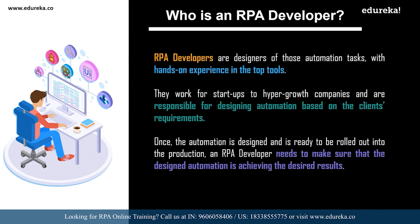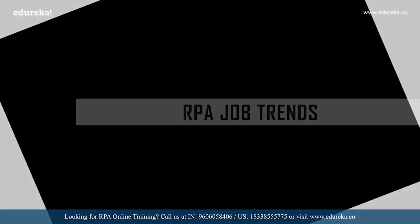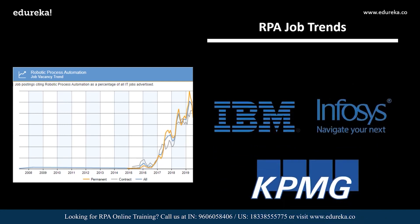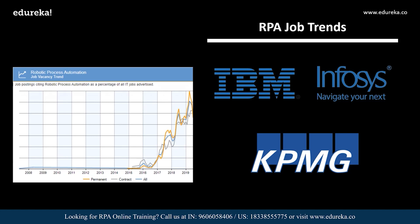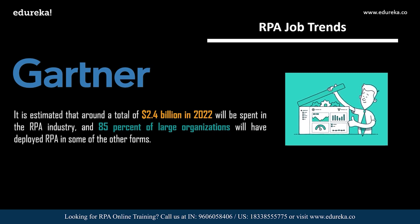If you're from a quality analyst, testing, software engineering, or application development background, then RPA developer is definitely a career role you can go for. Looking at the job trends, the number of RPA developer jobs in the United Kingdom is increasing on a large scale. RPA developer career opportunities will only shoot through the roof, with companies like IBM, Infosys, and KPMG offering lucrative salaries. According to Gartner, around 2.4 billion US dollars is estimated to be spent in RPA by 2022, and 85% of large organizations will have deployed RPA in some form.